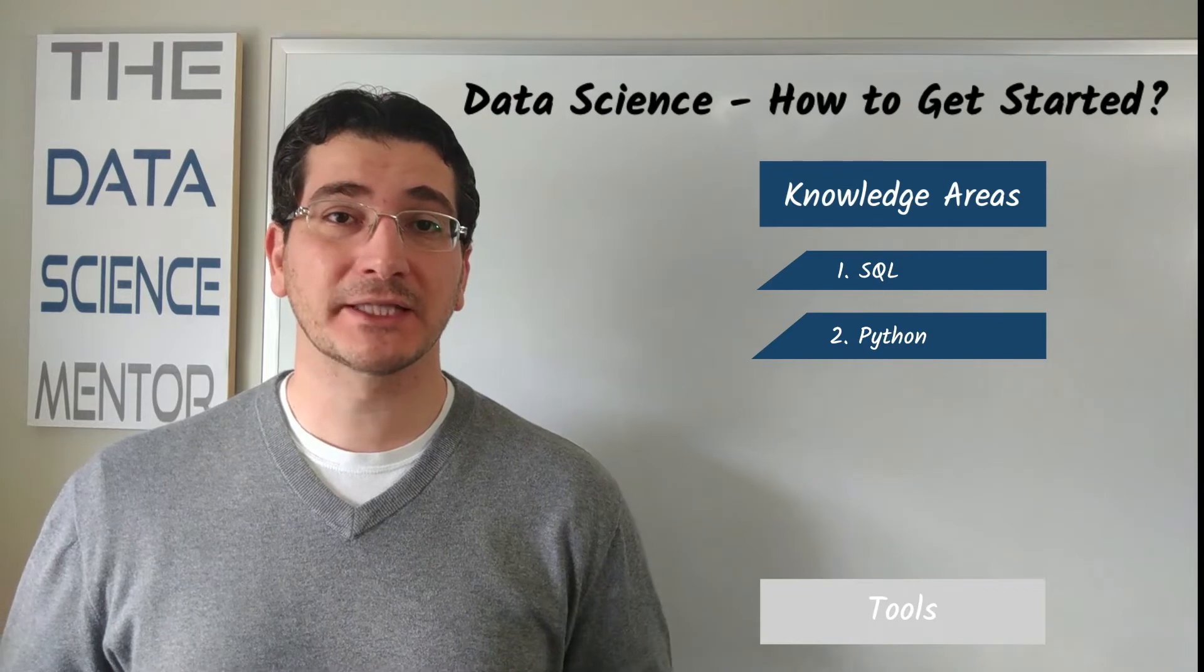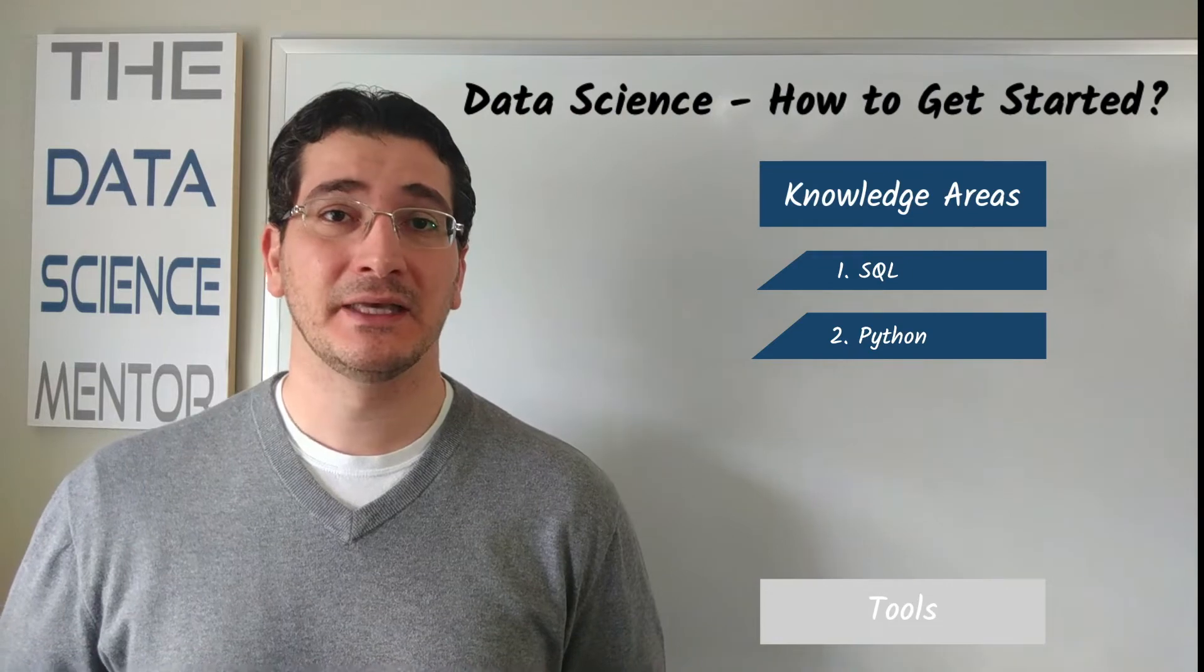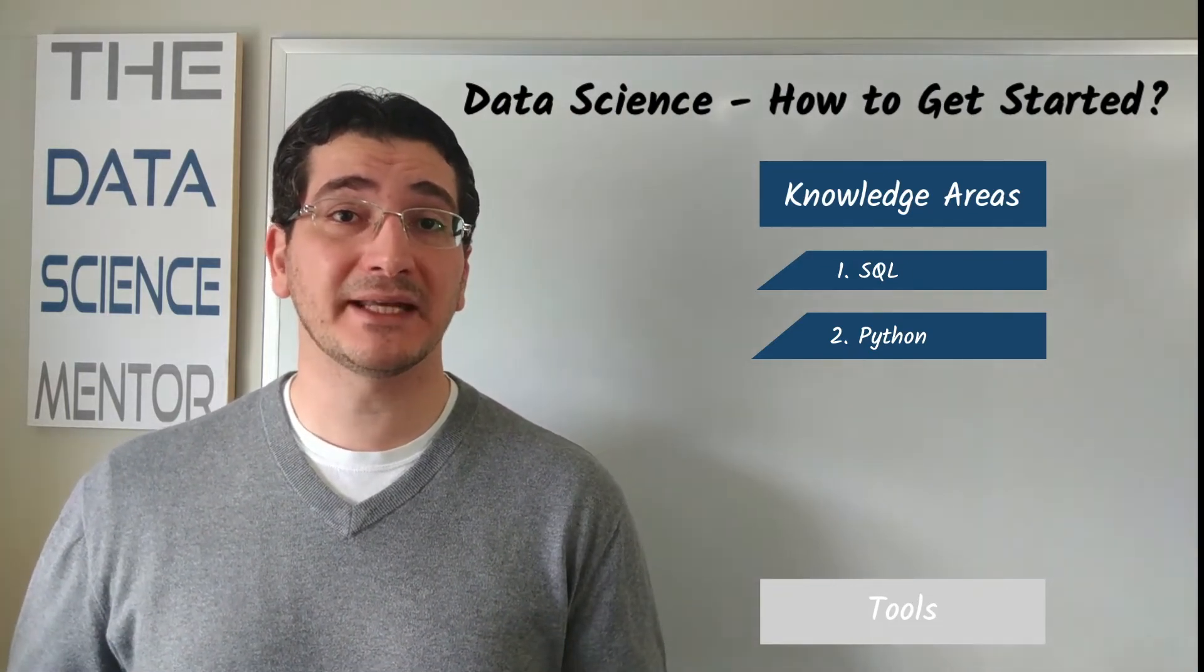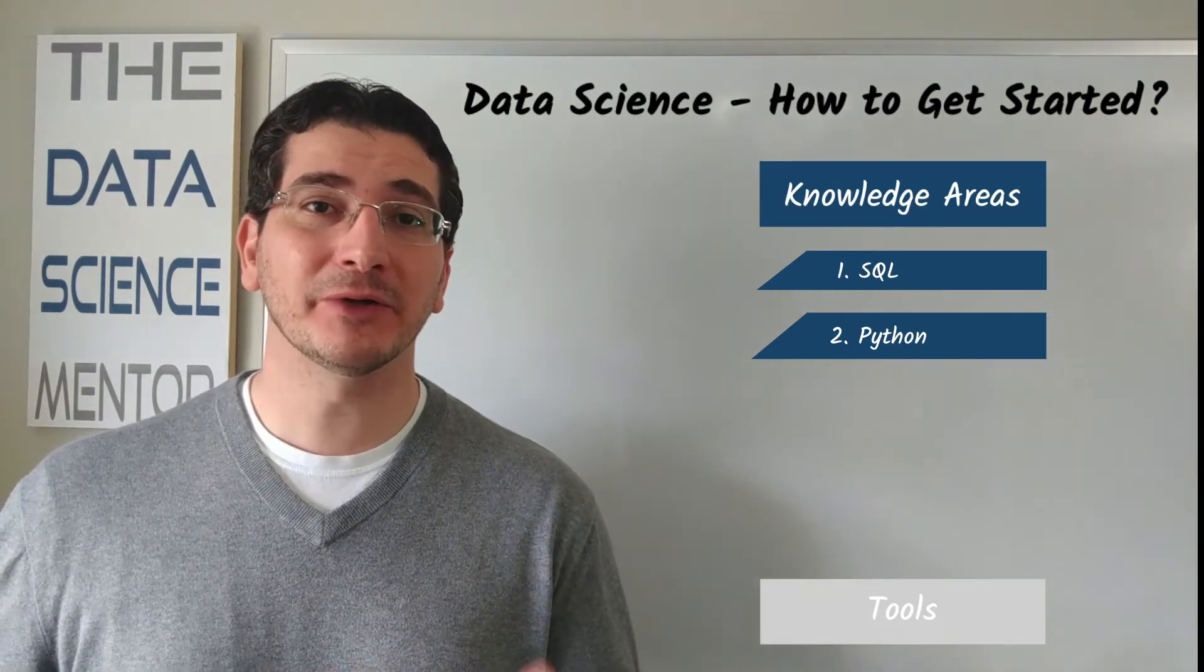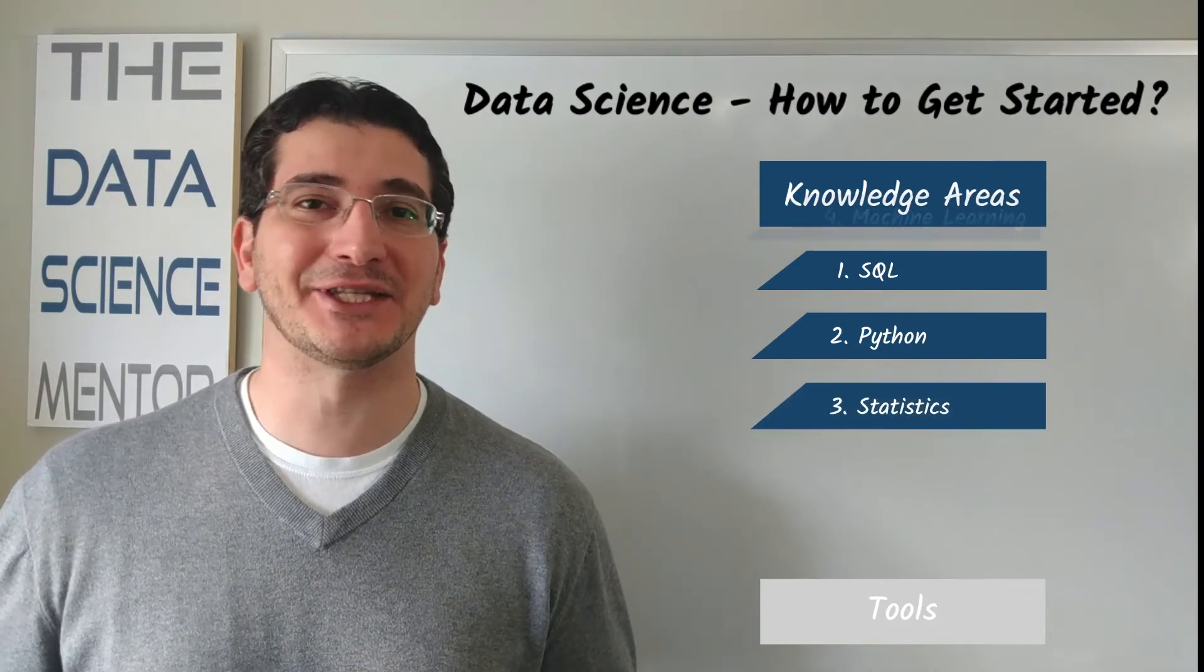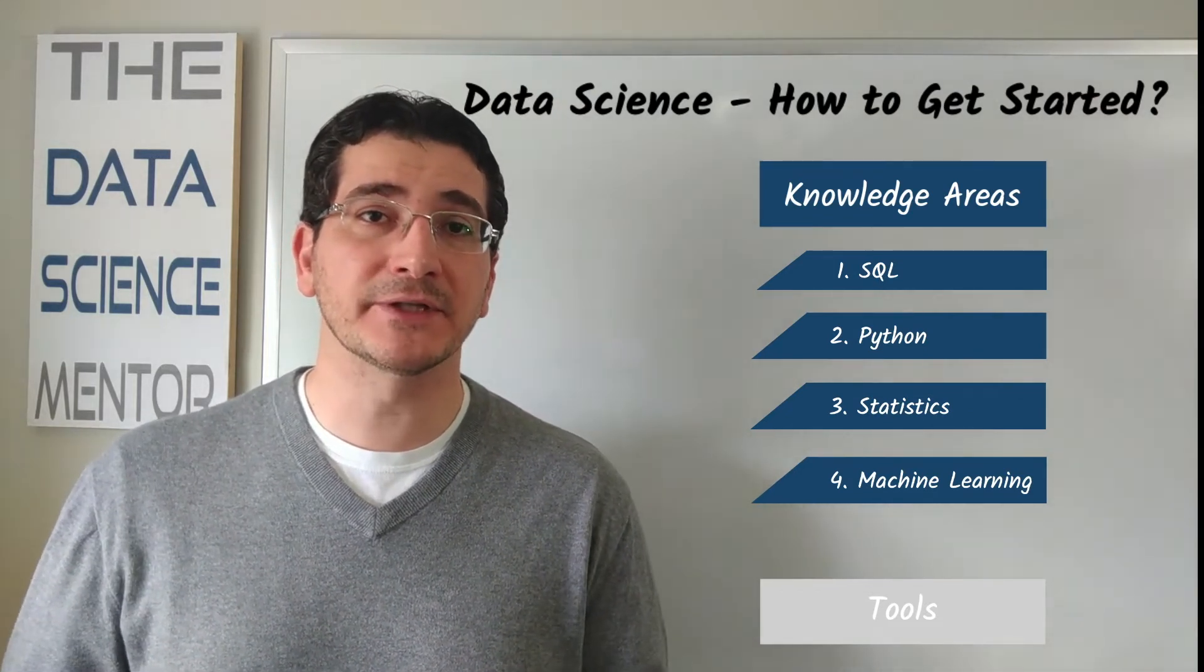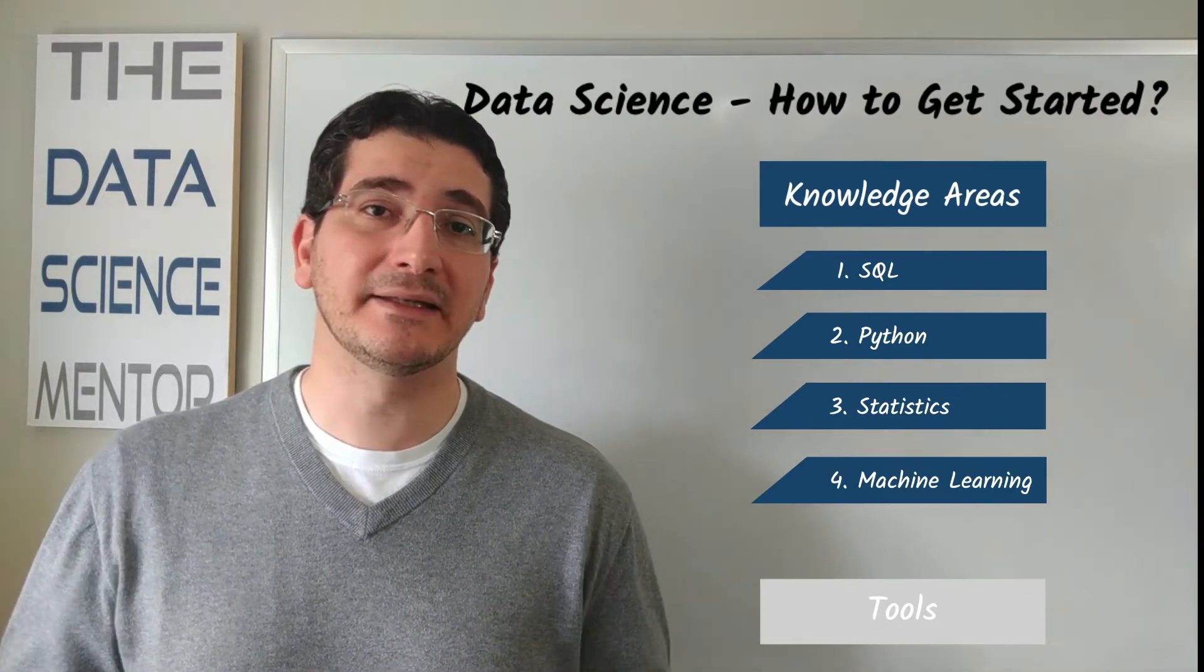Now, not all data science projects require the use of machine learning or any other subset of artificial intelligence. You can actually work on many data science problems and solve them with some data analysis and effective data visualizations. But for problems where you will need to test some statistical significance or build a model to automate a process, you will need to learn some statistics and machine learning. For statistics, focus on learning about the different types of variables, how to determine if variables are correlated, and how to determine if the difference between variables is statistically significant.